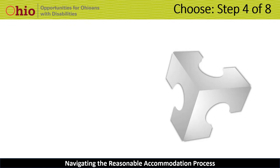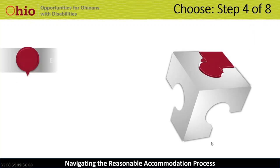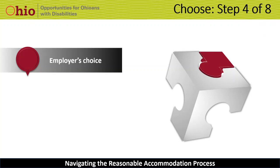At this point, we have talked about how to request an accommodation, how to gather the information needed to move forward, and ways to identify options. Now we are ready to choose the solution — Step 4. Ultimately, you as the employer retain the right to choose the effective accommodation. If there is more than one effective solution and one is less expensive or easier to implement, you may decide to go with that option. However, you are encouraged to consider the person's preference. Once the accommodation is selected, discuss the choice with the person and inform them of what to expect next in the process.